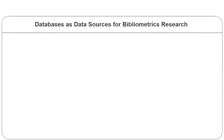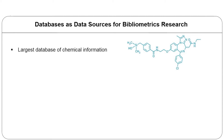Let us try to understand some of the data sources for bibliometrics. The most widely used data sources will be discussed here. For the sake of objectivity, I have listed these data sources in alphabetical order and the list is illustrative, not comprehensive. Let us first take Chemical Abstract Service, popularly called CAS. This is one of the data sources normally used by bibliometricians.